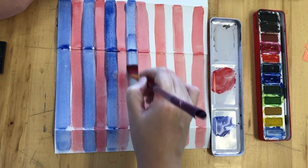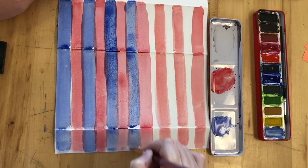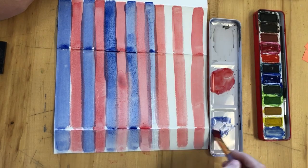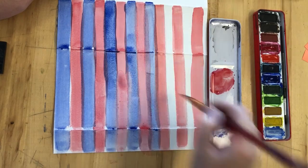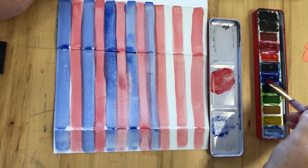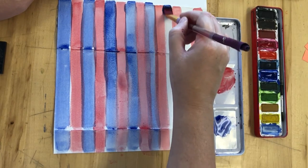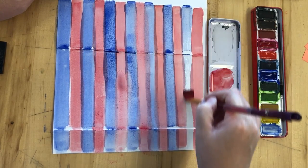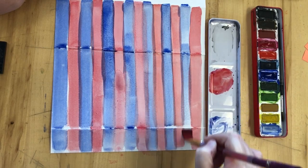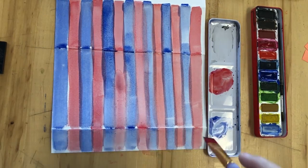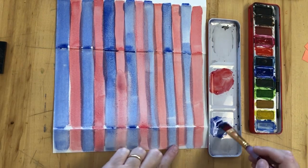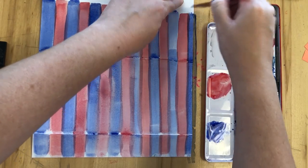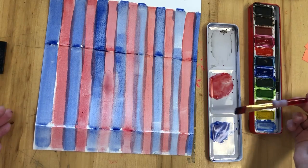Now you don't have to do red and blue. You might have different colors in mind that you'd like to do for your stripes. Last little strip on the end here. And that's going to be my stripey roof that I'm going to leave to dry.